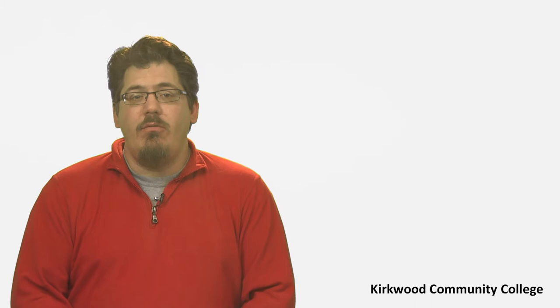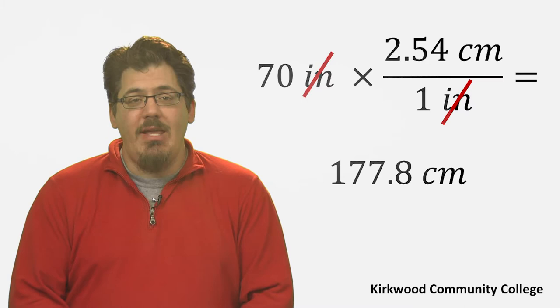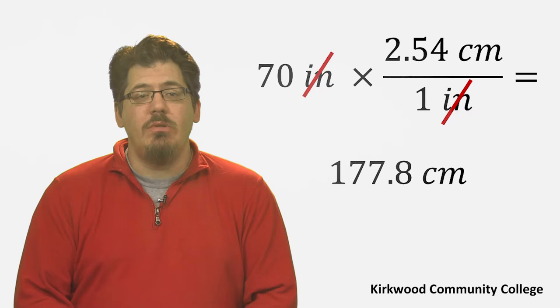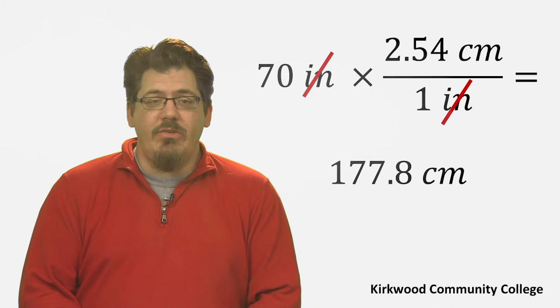For example, suppose that you are 70 inches tall. If you multiply 70 inches times 2.54 centimeters per inch, your height becomes 177.8 centimeters. Therefore, 70 inches is equivalent to 177.8 centimeters.